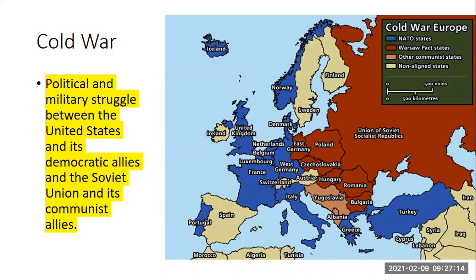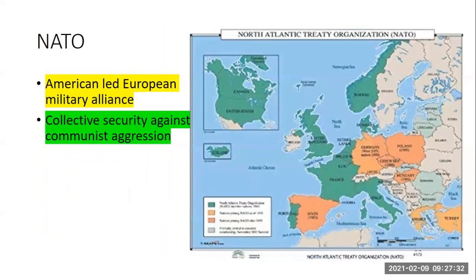The Cold War is a political and military struggle for global power. The Soviets want communism to spread around the globe. The United States wants democracy and capitalism to spread around the globe. The United States, with our Western European allies, form a military alliance for protection from communist aggression. It's called NATO — an American-led European military alliance, North Atlantic Treaty Organization. The United States is the strongest member, and will help defend these European countries if they were to be attacked by the communists.